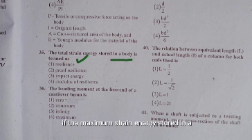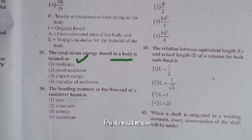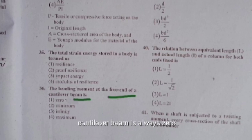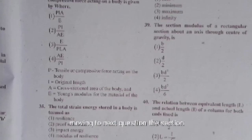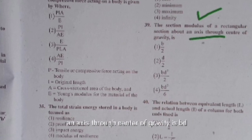The bending moment at the free end of a cantilever beam is always zero. The shear force at the free end of a cantilever beam of length L carrying a UDL of w per unit length is also zero. The section modulus of a rectangular section about an axis through the center of gravity is bd²/6.